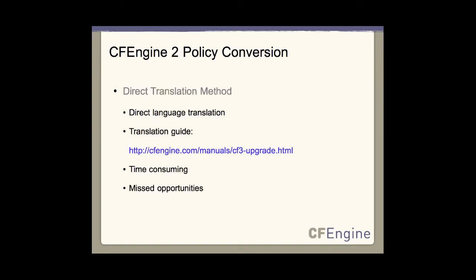In the direct translation route, you're committing to perform a line-by-line translation. To assist you, we do have an upgrade guide on the CFEngine website — an upgrade manual called CFEngine3upgrade.html or a PDF. It contains a comprehensive language translation codebook. However, for large policies, this can be a pretty time-consuming prospect. By using direct translation, you could really miss a good opportunity to reduce the policy footprint, which is why the modularity of CFEngine 3 and its new features can really simplify and enhance what you already have and improve readability. We would really recommend that you go the other route and just redo everything.